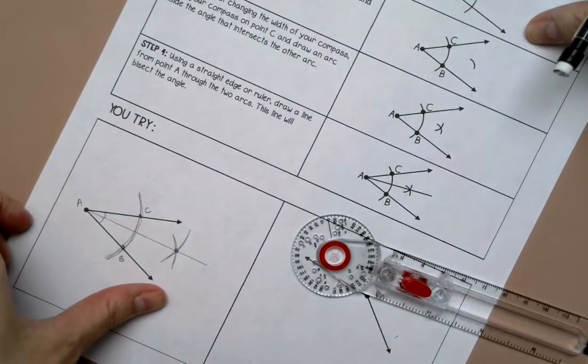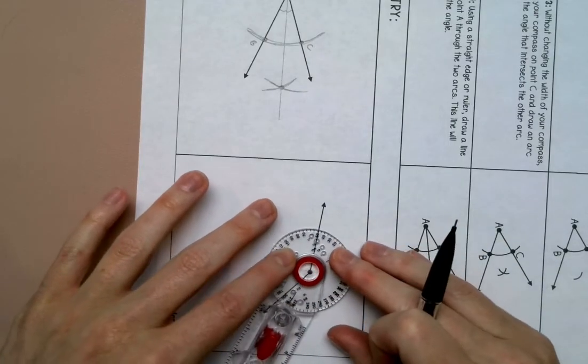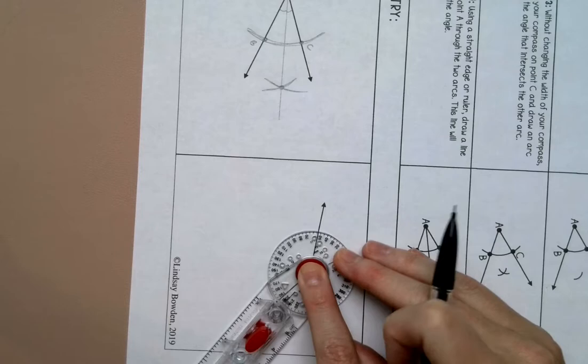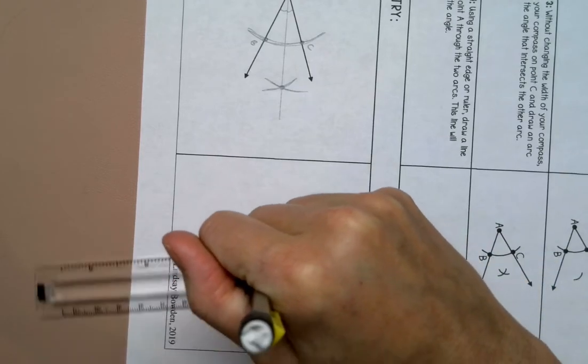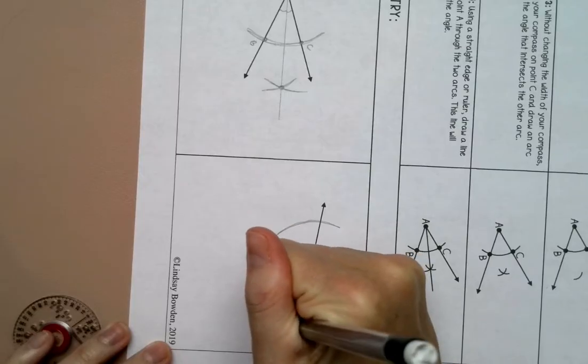Let me turn this around here. Put my compass on A. There we go. I'm going to call this B and this C.